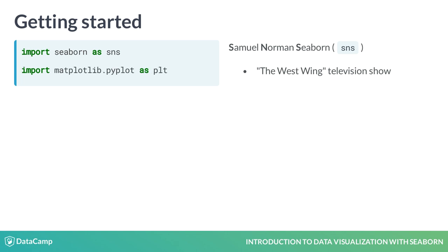We also need to import Matplotlib, which is the library that Seaborn is built on top of. We do this by typing import matplotlib.pyplot as plt. plt is the alias that most people use to refer to Matplotlib, so we'll do that here as well.